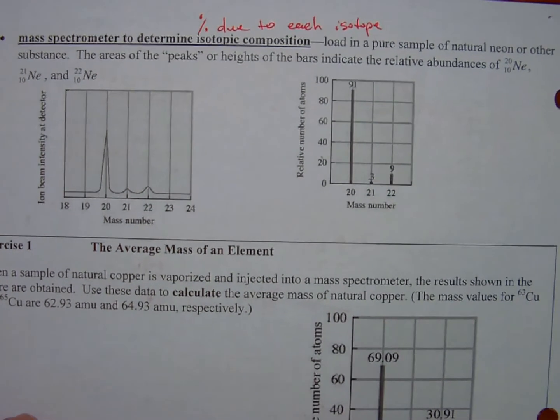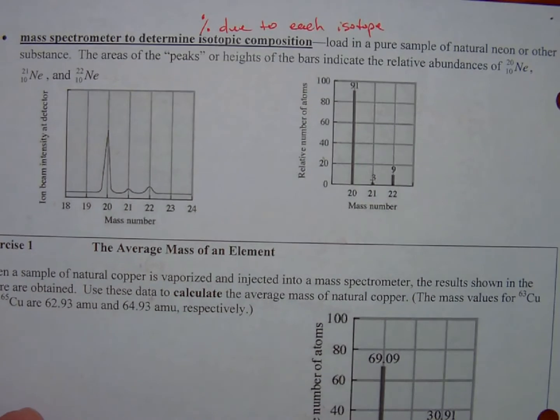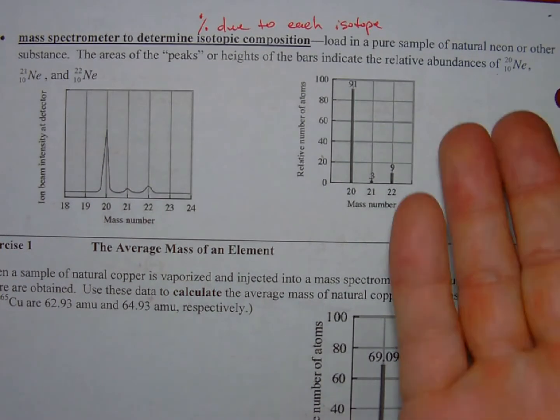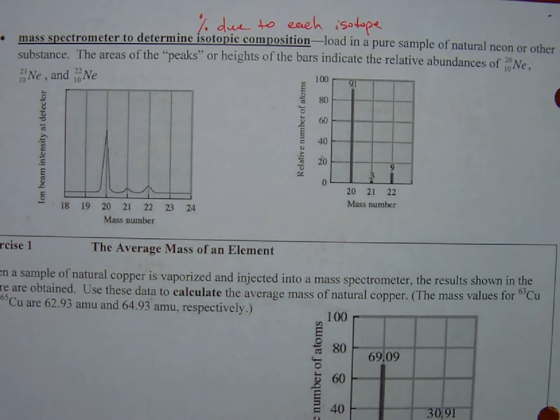A mass spectrometer will actually give you a readout, something like we see here, these two graphs right here. The example here is we're using neon - a natural sample of neon. We load a pure sample of natural neon or some other substance, here we're using neon.